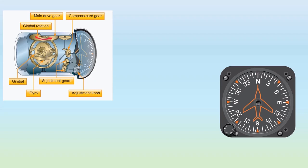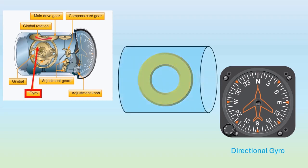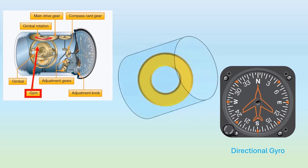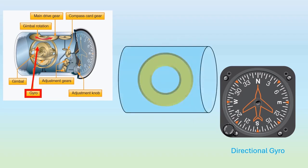The heading indicator, also known as a directional gyro, utilizes a vertically spinning gyroscope. Operating on the principle of rigidity in space, the gyroscope maintains its orientation in the vertical direction while the instrument case rotates around it in response to the airplane's motion.